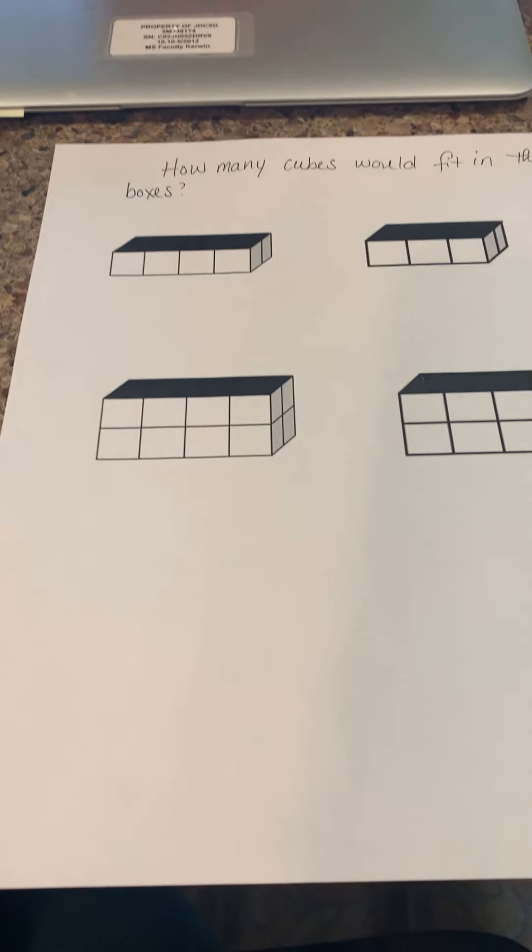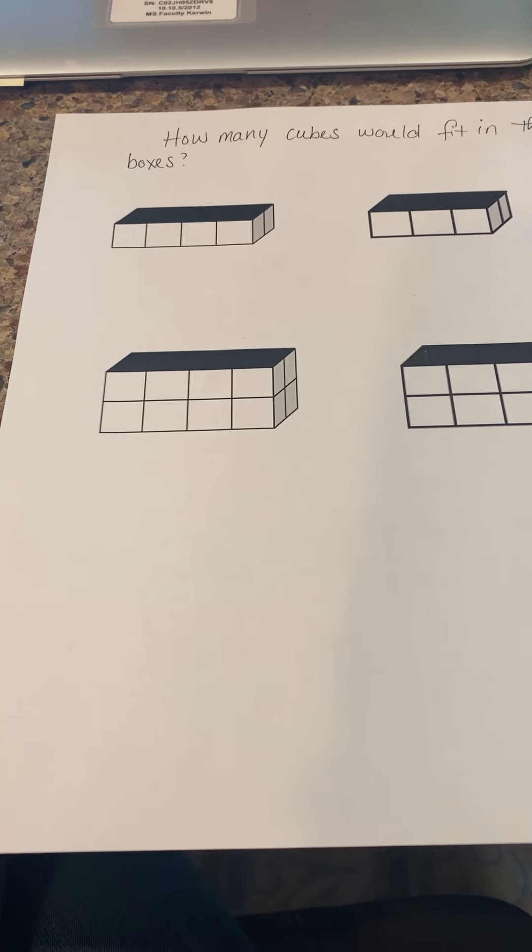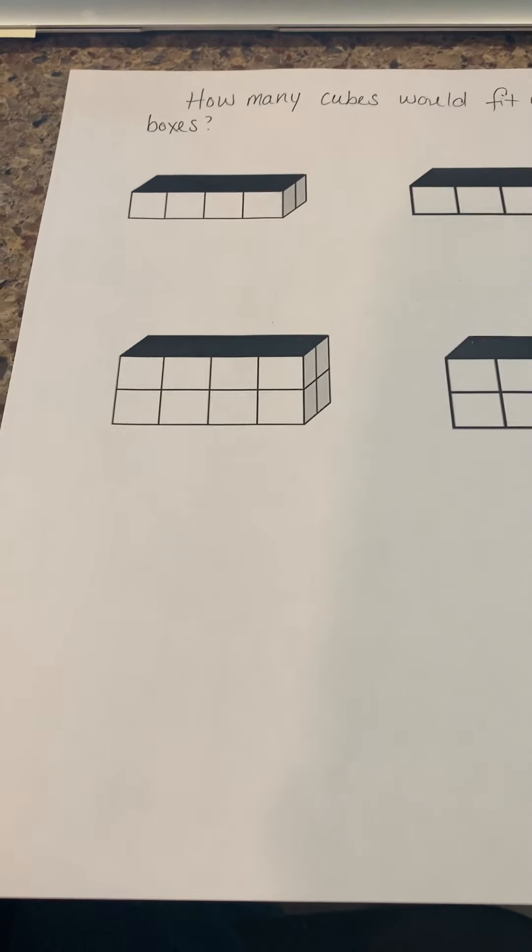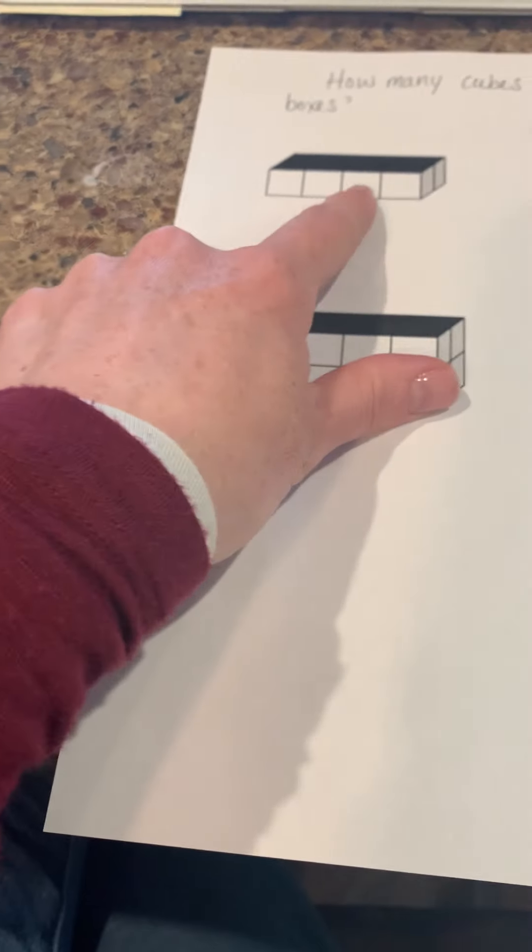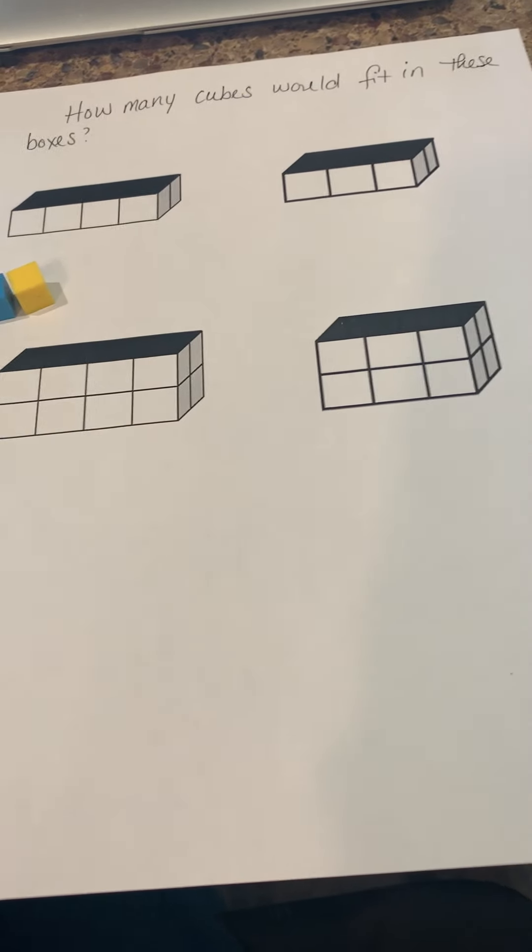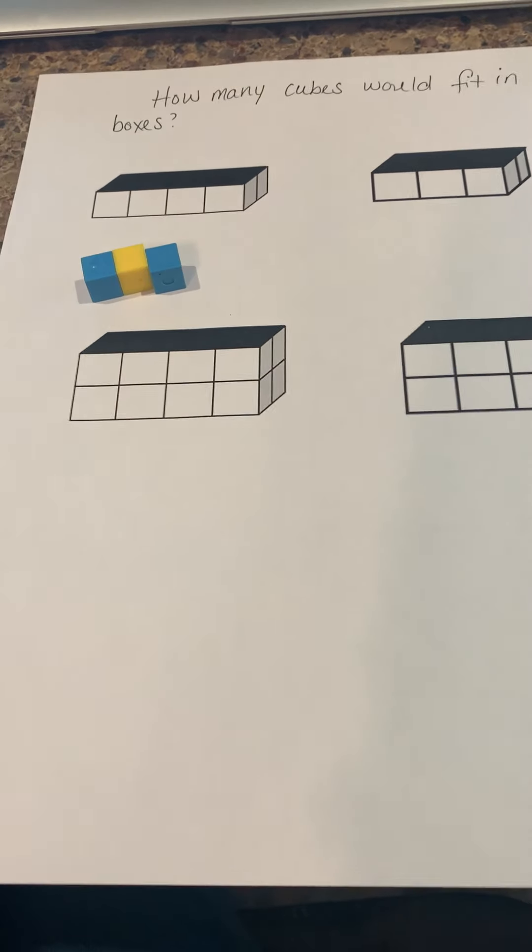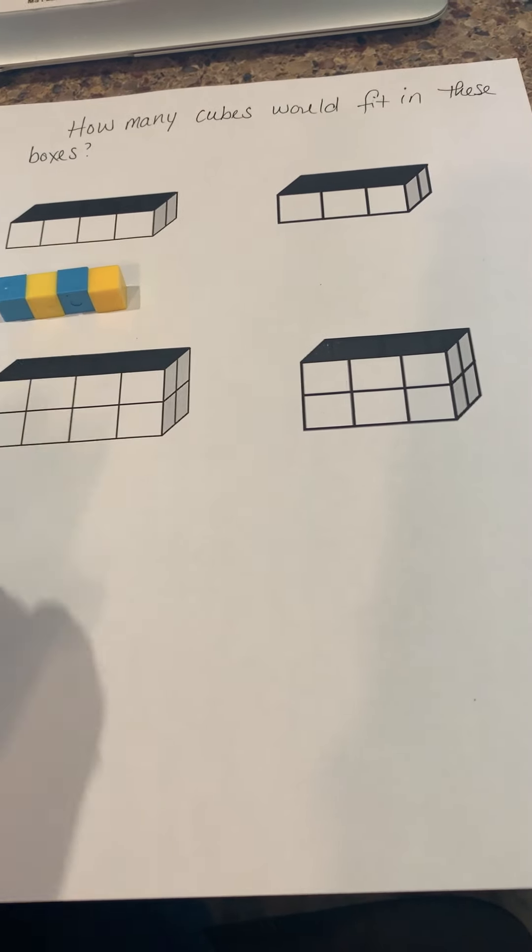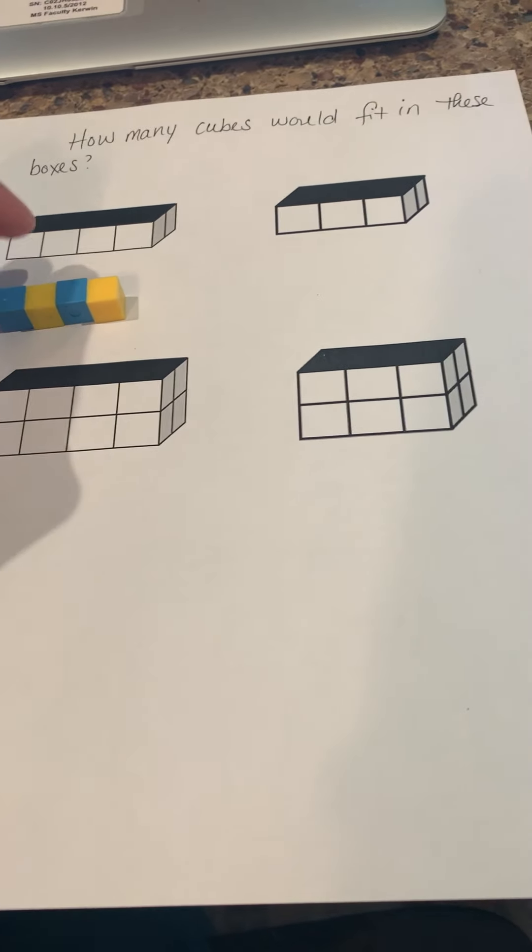So I don't know if you're like me, but I have a hard time visualizing stuff. So I got some cubes here and we're going to actually figure it out. So I see that there are four boxes right in the front. So I'm going to make four boxes that would fit to cover the front of this box. They would fit right in there.